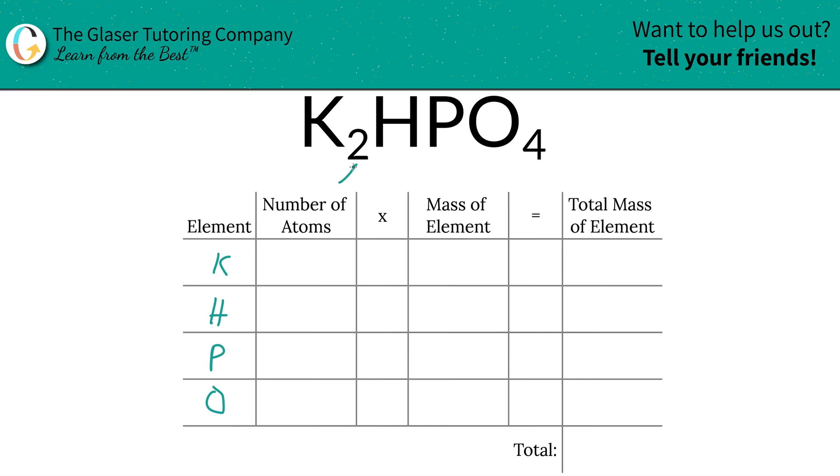Next is to write down the number of atoms of each, and that's where the subscripts come into play. At the bottom of potassium there's a 2, the bottom of hydrogen there's an assumed 1, phosphorus same thing there's a 1, and then oxygen there's going to be 4.